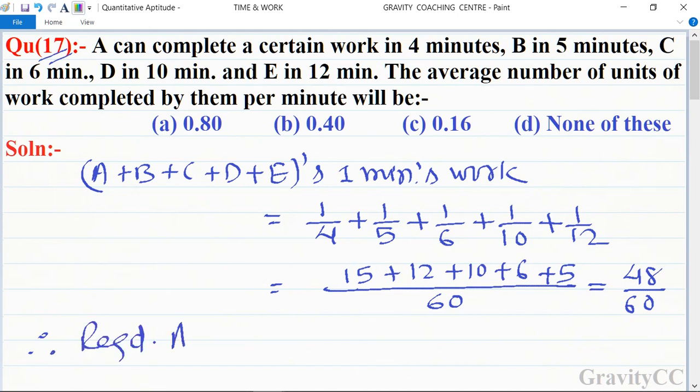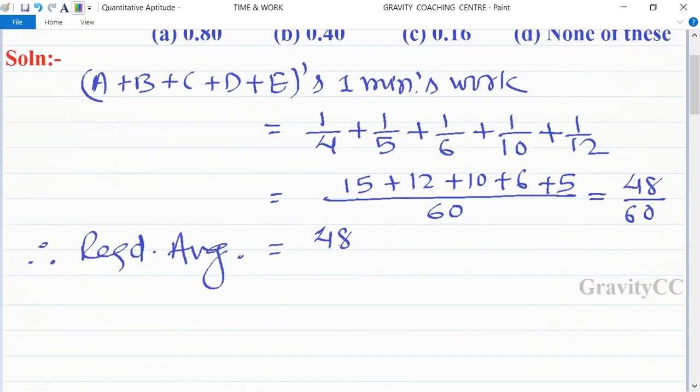required average is equal to 48 upon 60 upon 5. So is equal to 48 upon 60 into 1 upon 5. And cancel by table of 12, so 12 4 5, is equal to 4 upon 25